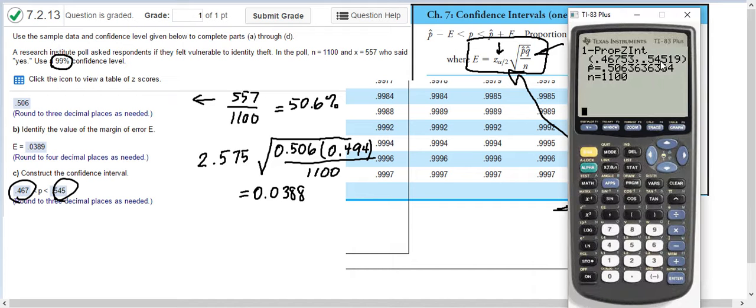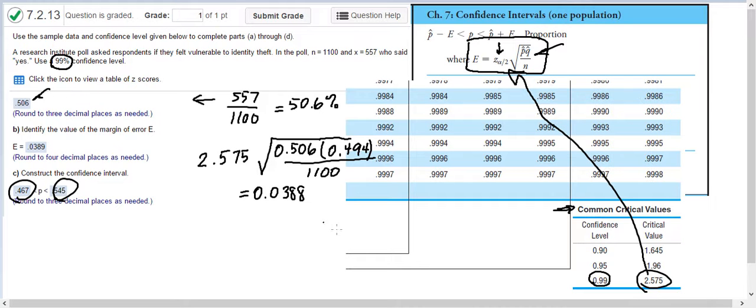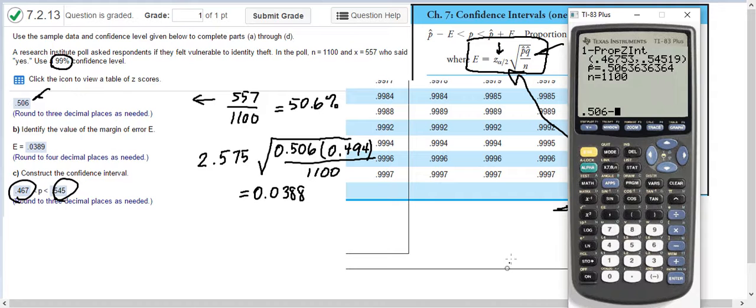So the way you can get the error from this is to take .506 minus this number. So .506, which was the number here, right? You take that and subtract either one of these. One will give you positive, one will give you negative.